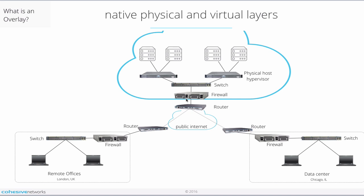All three sites have connected to the internet by switches, firewalls, and routers. All three topologies are made up of a combination of physical and virtual devices, multiple layers, and different types of virtualization. We call this setup the native layer.